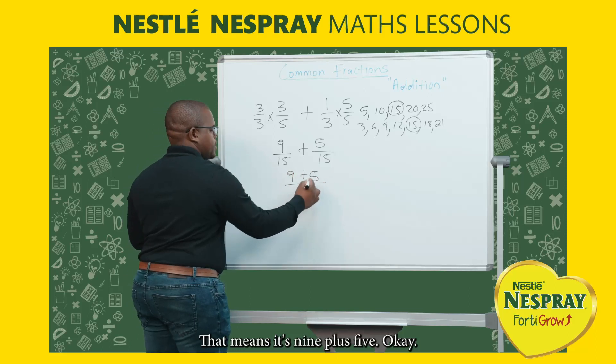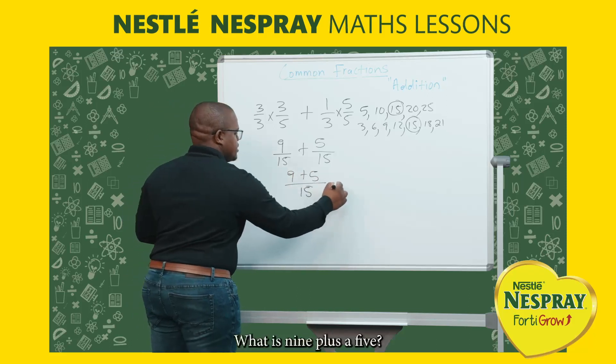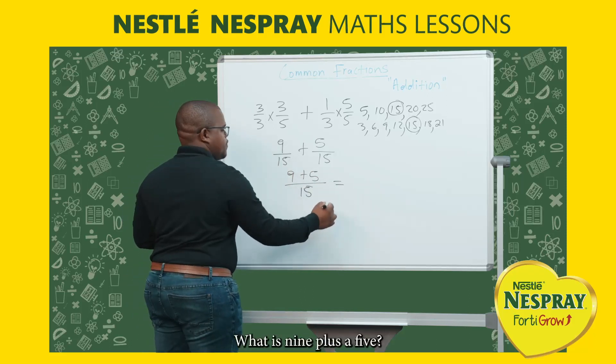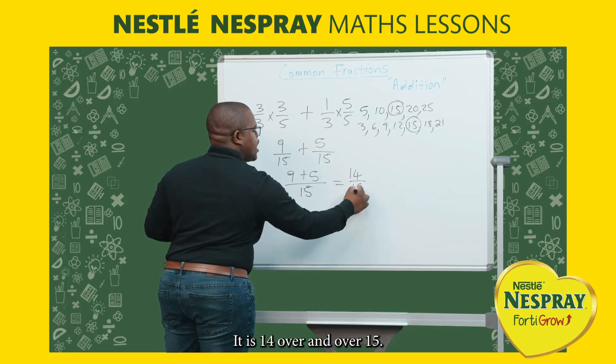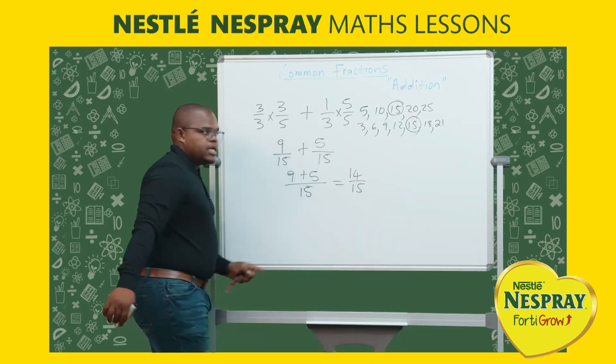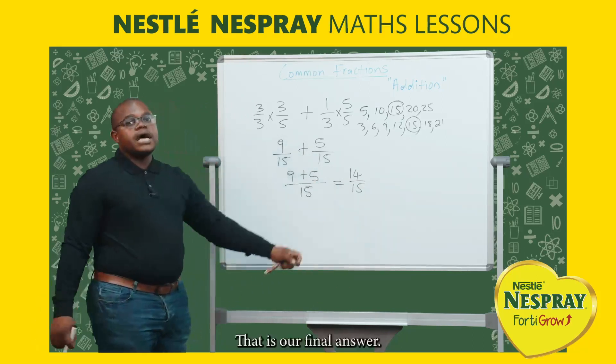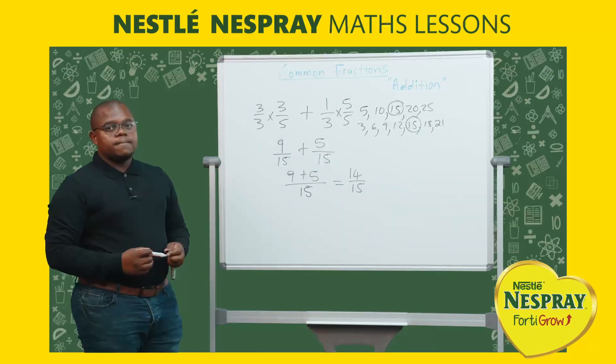9 plus 5 is 14, over 15. So 14 over 15 is our final answer.